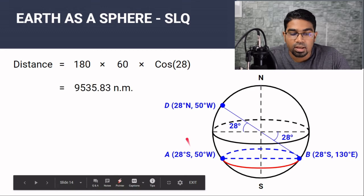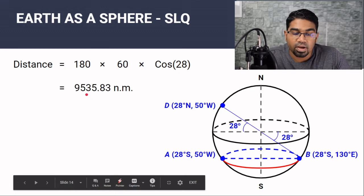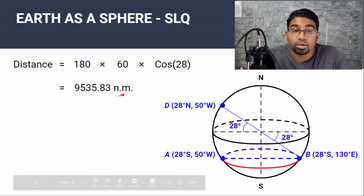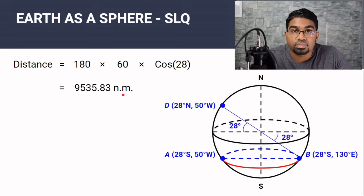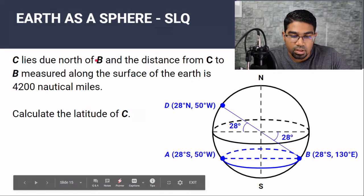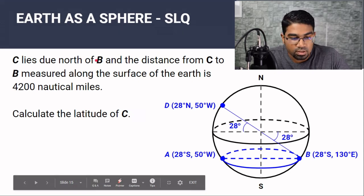Substituting: 180 × 60 × cos(28°) gives a distance of 9535.83 nautical miles.